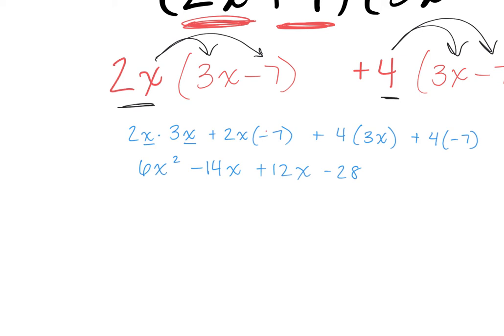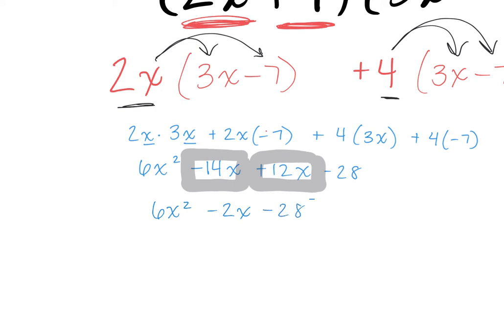Does anyone see it? Carlos? Good. What do we call two terms that have the same variable? Like terms — so we can combine them. We're going to get 6x squared, and then Alan gives us minus 2x, and then minus 28. Now are we done? Why? There's nothing else to combine — everything else is a different term: there's an x squared, there's an x, and then there's 28 with no x at all.